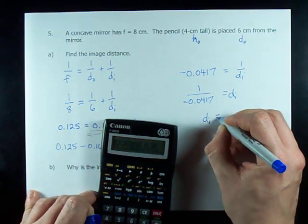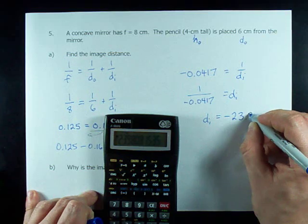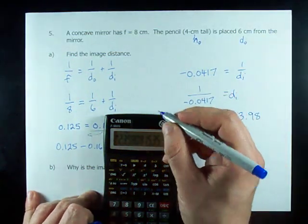D_I is negative 23.98. And the units are going to be centimeters.